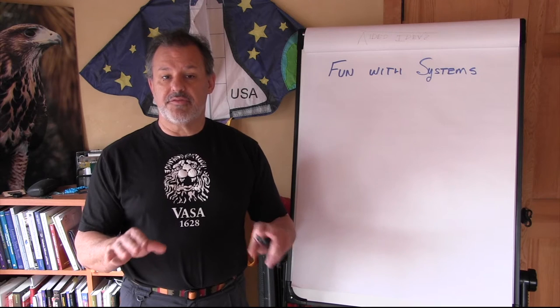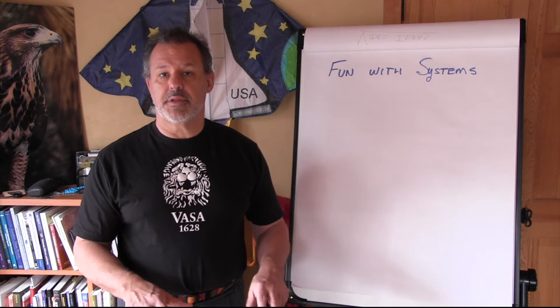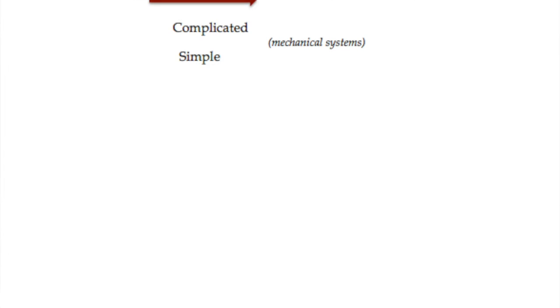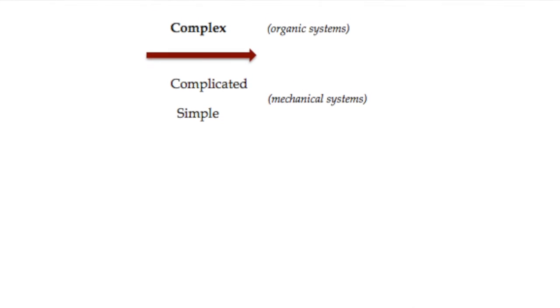We call this both the simple and the complicated below the line. Below the line meaning there's got to be an above the line. The above the line is a complex system.